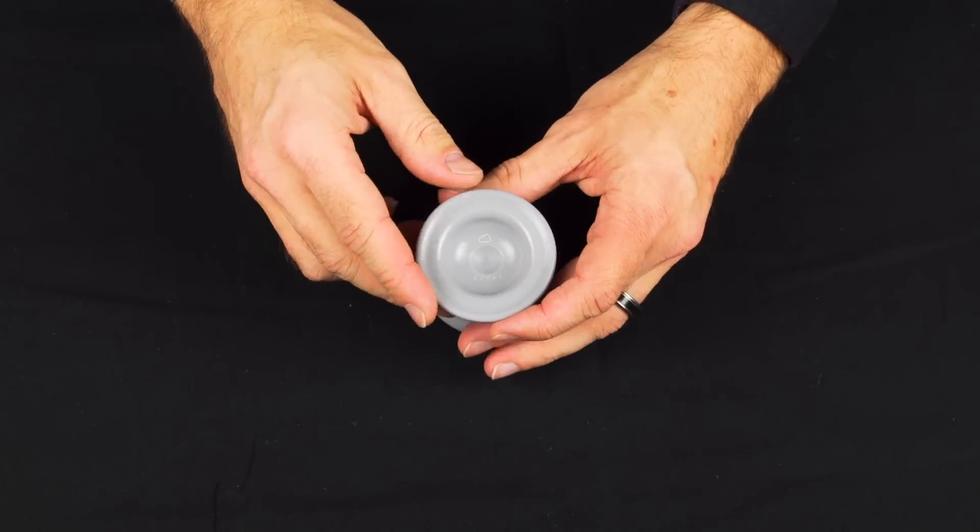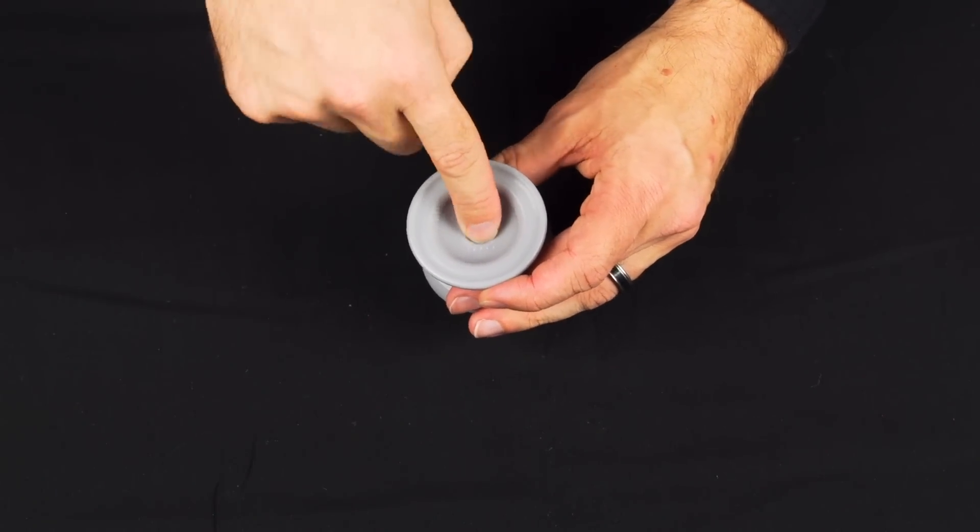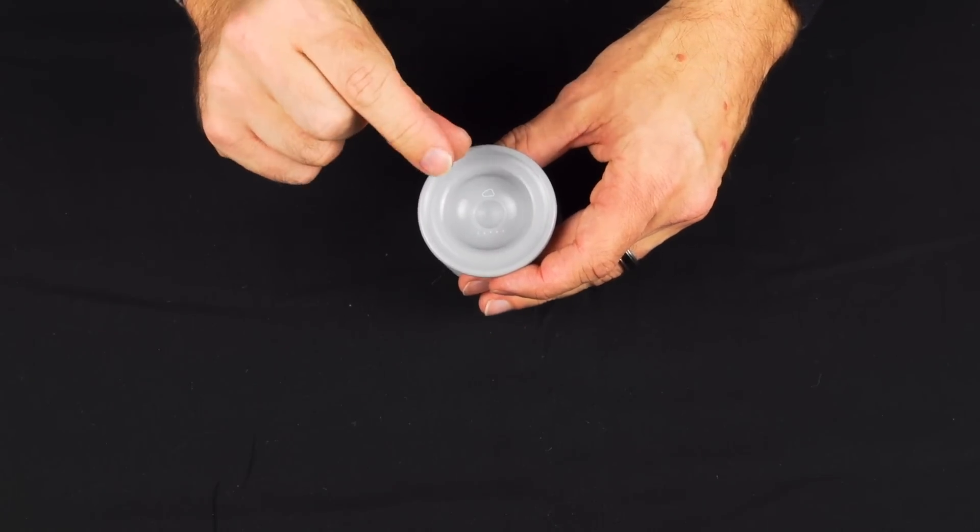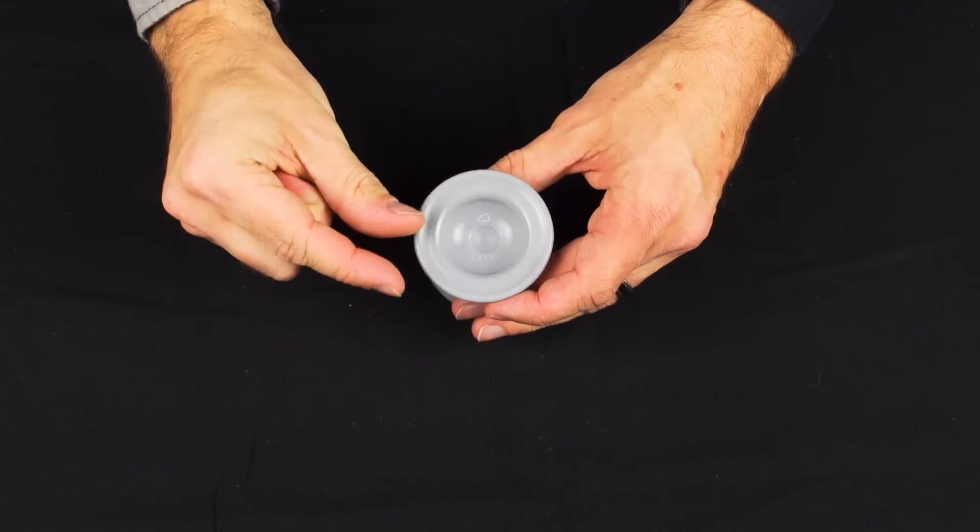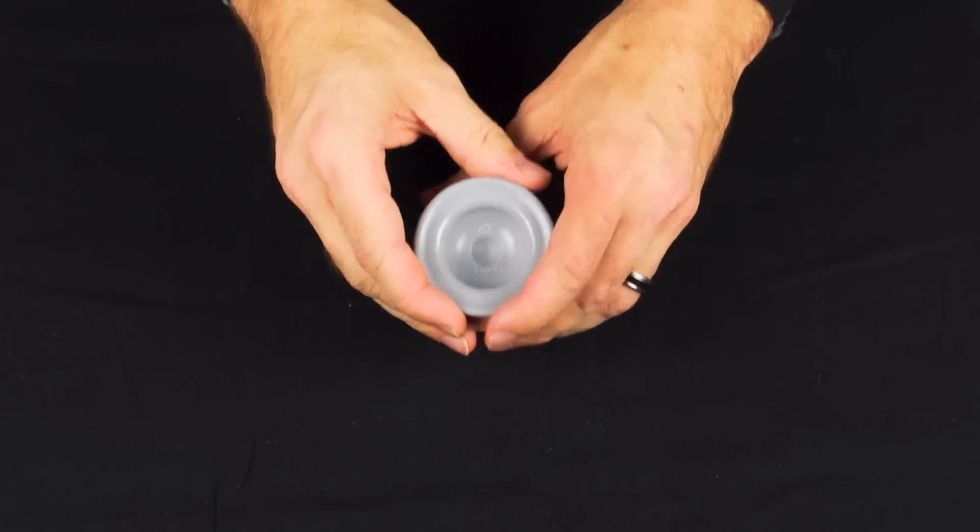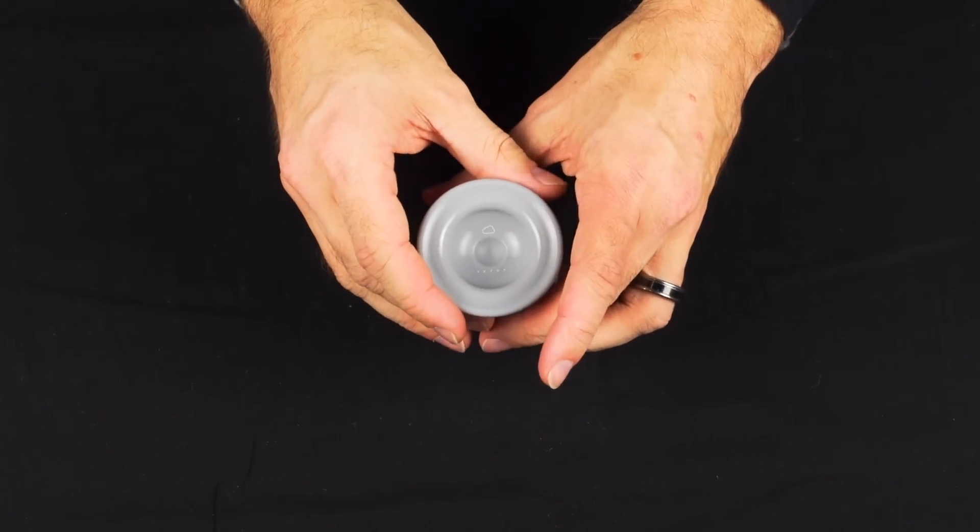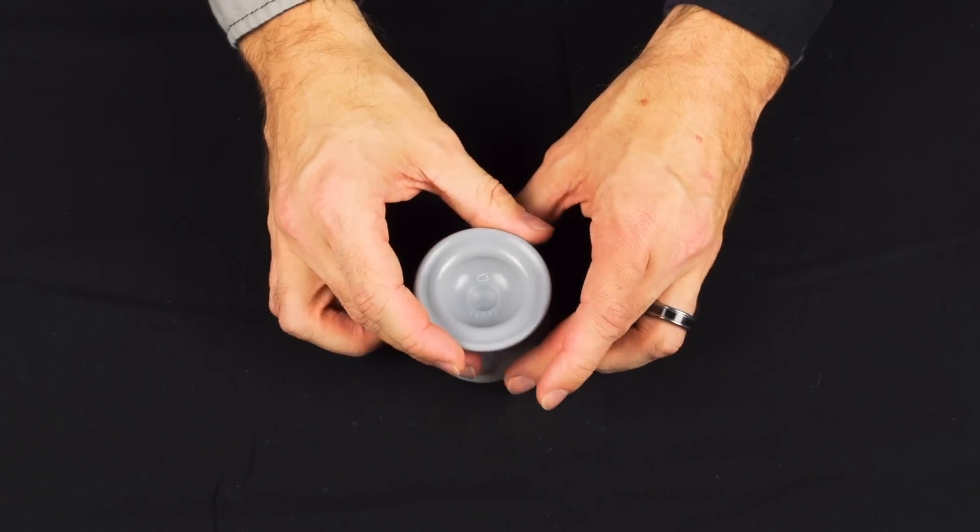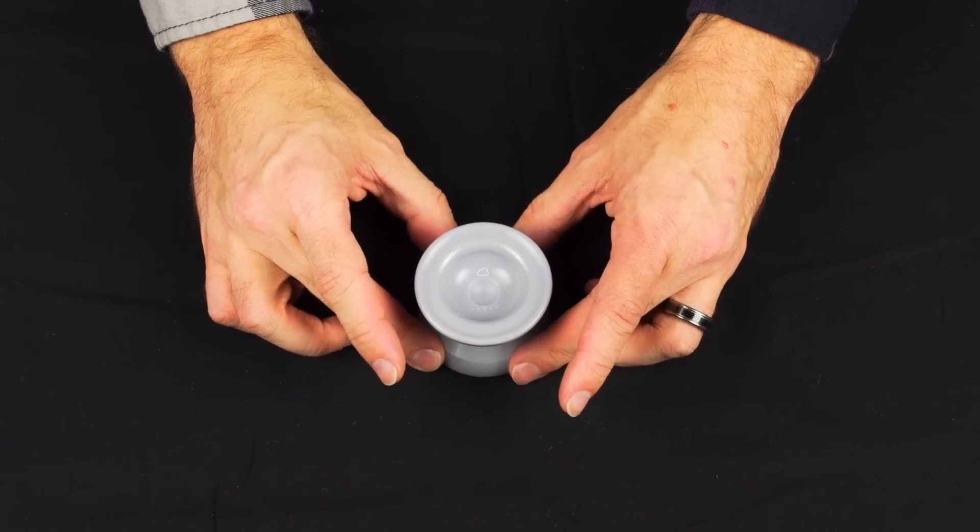Now there is one trade-off with this yoyo. Because of how deep this finger spin bowl needed to be, the plastic under there is pretty thin. You don't want to be hitting this yoyo on the ground an awful lot, and we would definitely recommend against using the Skyba for 5A.